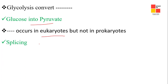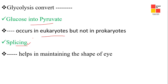Next one: what occurs in the uterus but not in proper use? The right answer is splicing — though attenuation may also be considered. Next one: what helps in maintaining the shape of the eye? The right answer is vitreous humor.